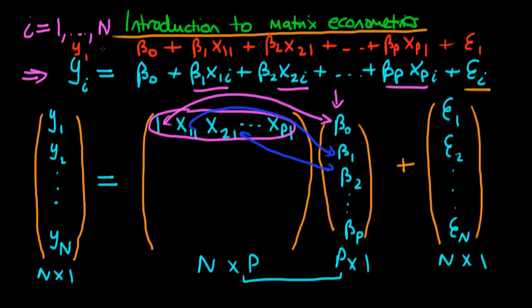So writing out the first row in full, we'd have the dependent variable for observation 1, y1 is equal to this linear combination of the independent variables, plus the error term epsilon 1. So we've actually just recovered exactly what we had in the original equation, but we've just done it for the first row.